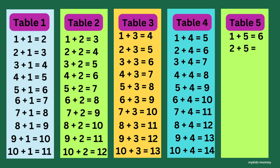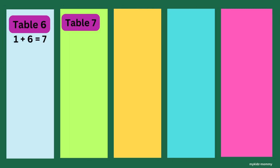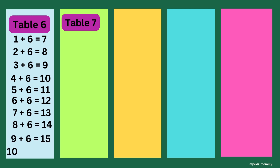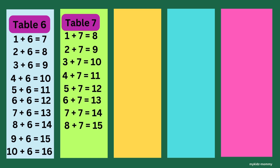Table 5. 1 plus 5 is 6. 2 plus 5 is 7. 3 plus 5 is 8. 4 plus 5 is 9. 5 plus 5 is 10. 6 plus 5 is 11. 7 plus 5 is 12. 8 plus 5 is 13. 9 plus 5 is 14. 10 plus 5 is 15. Table 6. 1 plus 6 is 7. 2 plus 6 is 8. 3 plus 6 is 9. 4 plus 6 is 10. 5 plus 6 is 11. 6 plus 6 is 12. 7 plus 6 is 13. 8 plus 6 is 14. 9 plus 6 is 15. 10 plus 6 is 16. Table 7. 1 plus 7 is 8. 2 plus 7 is 9. 3 plus 7 is 10. 4 plus 7 is 11. 5 plus 7 is 12. 6 plus 7 is 13. 7 plus 7 is 14. 8 plus 7 is 15. 9 plus 7 is 16. 10 plus 7 is 17.